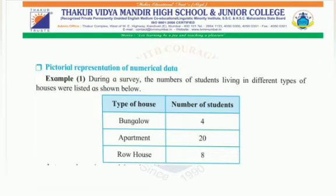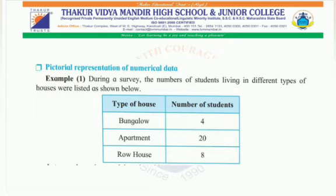As you can see in the table, the types of houses and number of students are: bungalow — four students, apartment — twenty students, and row houses — eight students. Let us make a pictograph based on this. For the cricket data, cricket balls were used. What icon should be used for the students? Surely, a smiley will be just right. But students, should we draw twenty faces for twenty children?